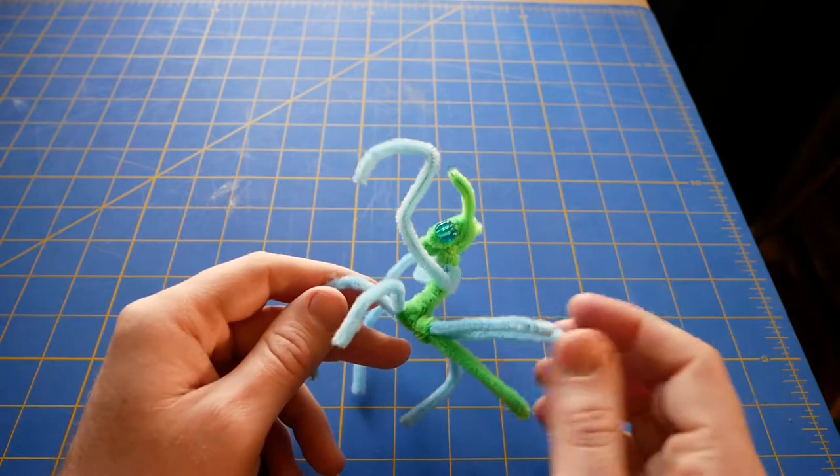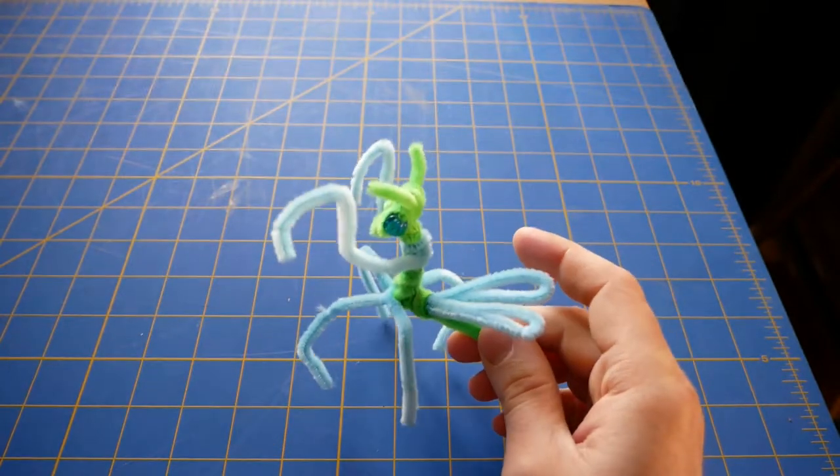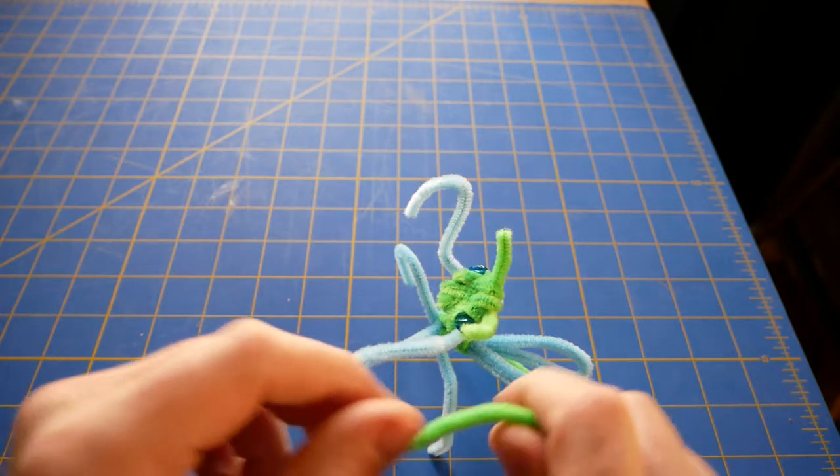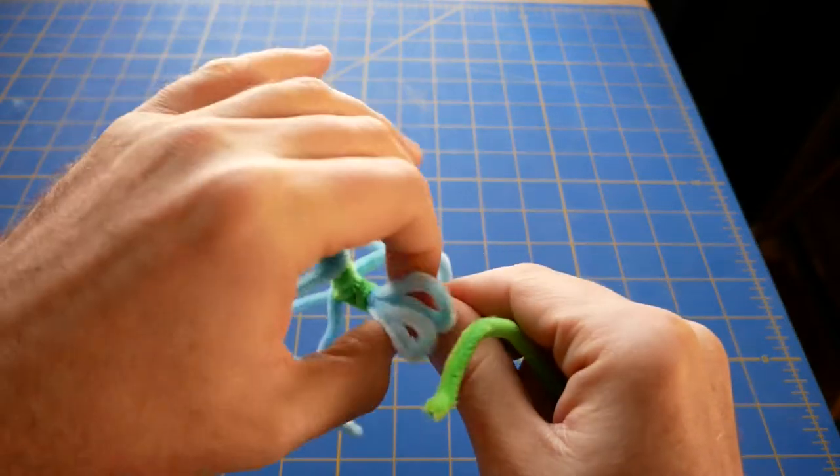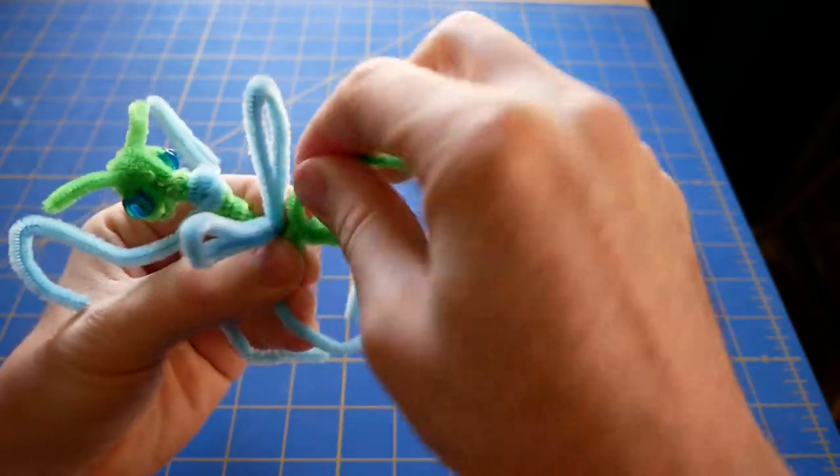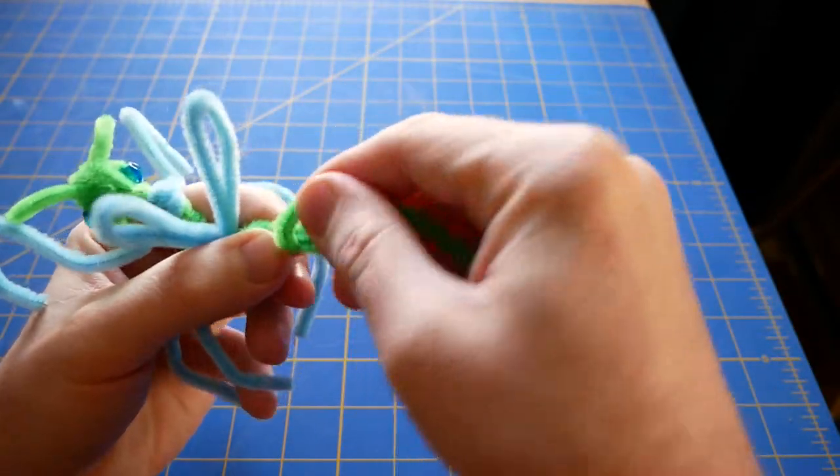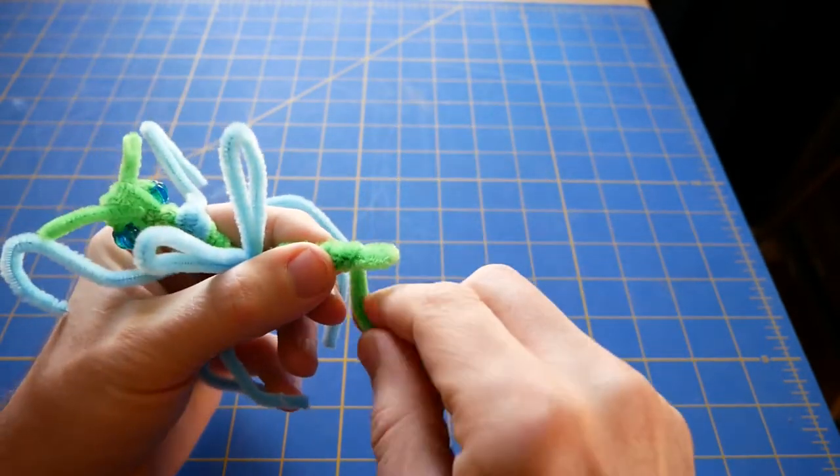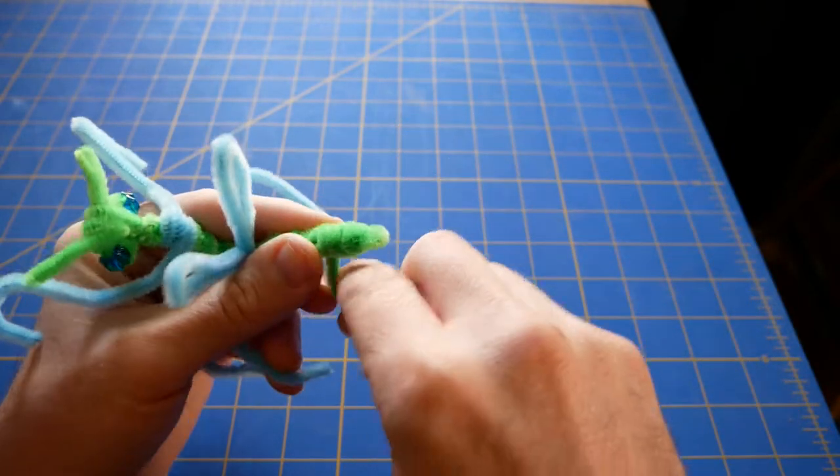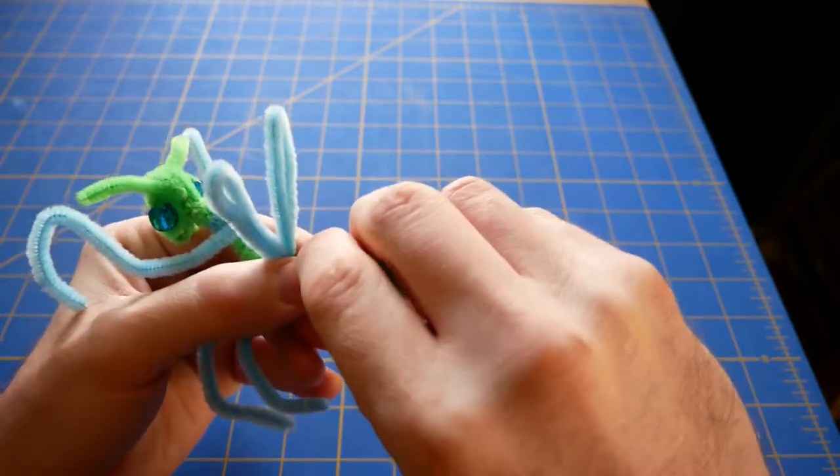Now you can leave your pipe cleaner praying mantis like this, or you can sort of fill them out more. So take a green pipe cleaner and to raise his wings here a little bit, just wrap on the back of his abdomen, I guess. Just wrap almost to the back and then turn around.